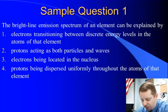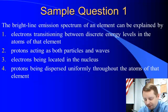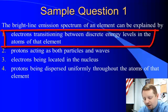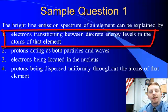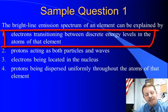Looking at a sample question: the bright line emission spectrum of an element can be explained by—we have four choices. Electrons transitioning between discrete energy levels in the atoms of that element? That sounds promising. Protons acting as both particles and waves? Interesting, but not really explaining what's going on. Electrons located in the nucleus? We know that's not true. Protons being dispersed uniformly throughout the atoms? That doesn't make sense either. So our best answer is one: bright line emission spectra are caused by electrons transitioning between specific discrete energy levels in the atoms of that element.